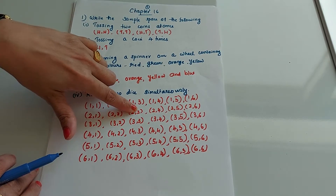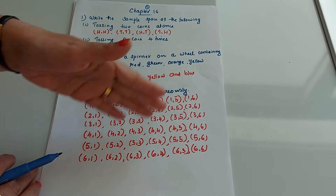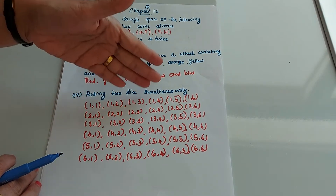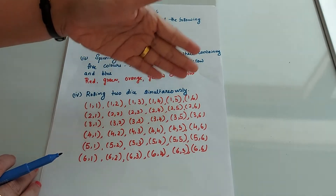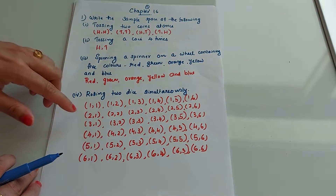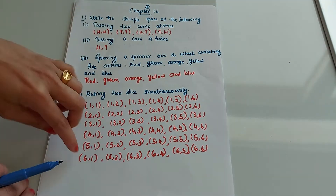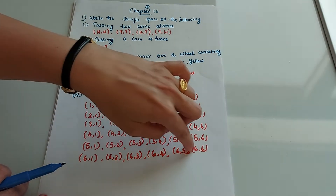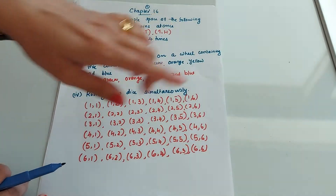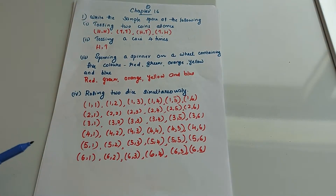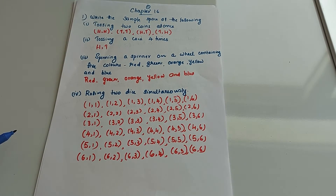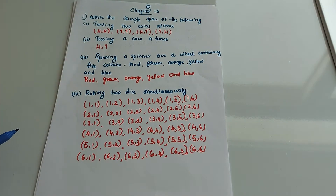Continuing the outcomes: 1-1, 1-2, 1-3, 1-4, 1-5, 1-6, 2-1, 2-2, 2-3, 2-4, 2-5, 2-6, all the way up to 6-1, 6-2, 6-3, 6-4, 6-5, 6-6. So there are 36 outcomes in total.